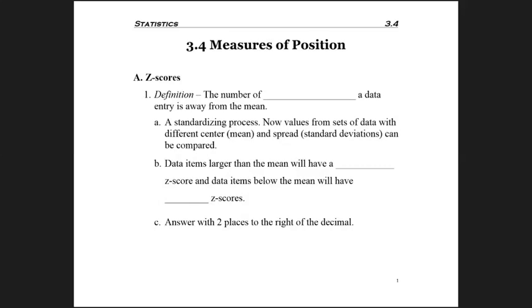So the first way we're going to do that is to study what's called a z-score. The definition of a z-score is the number of standard deviations a data entry is away from the mean. So we're taking one number and saying how far is it from the middle, but taking steps the size of a standard deviation.